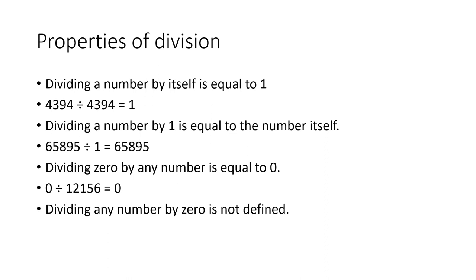Fourth: dividing any number by 0 is not defined — it is meaningless. So 2893 divided by 0 is meaningless.